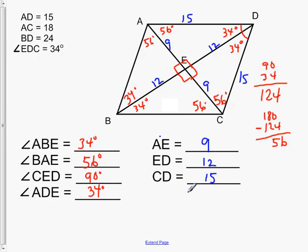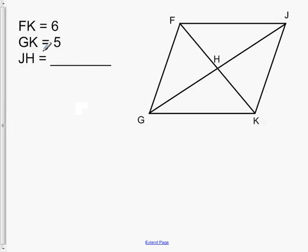So we've got one more problem to do, but this is basically summarizing the rhombus properties. So let's look at one more. This one says that FK is 6, GK is 5, and JH we need to figure out.